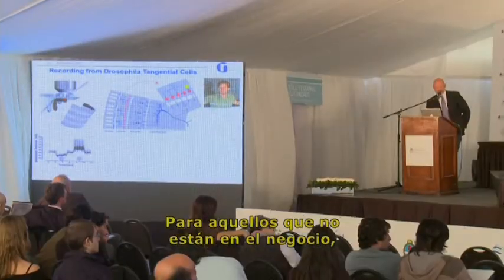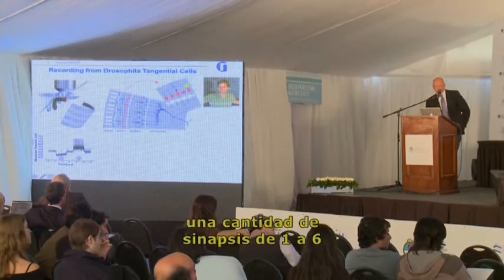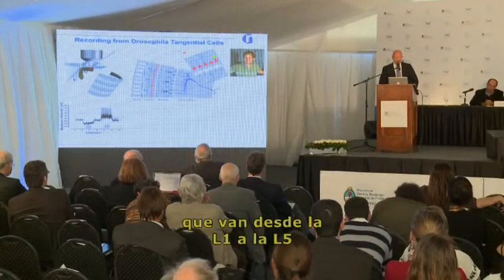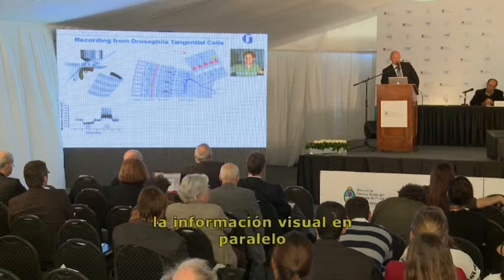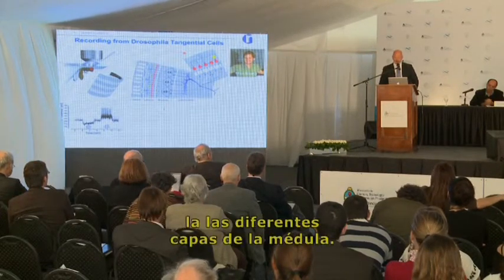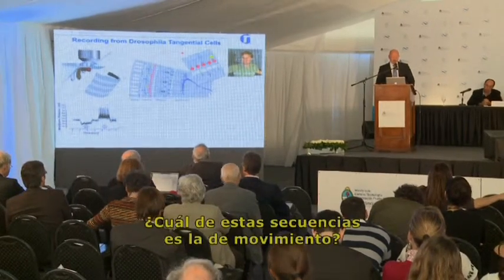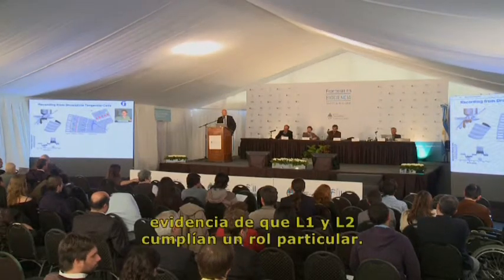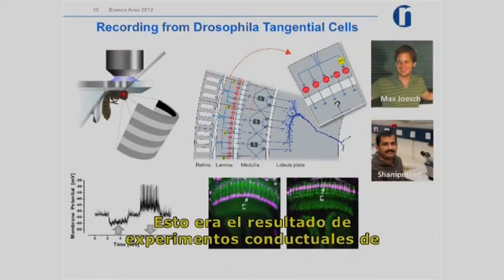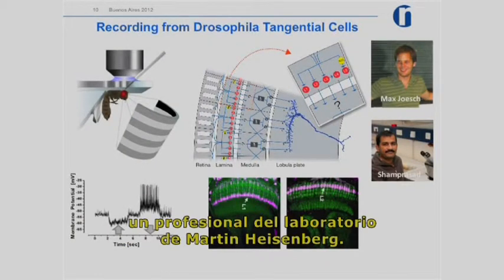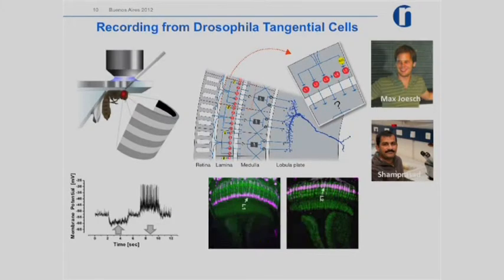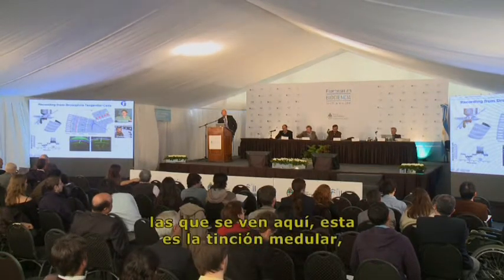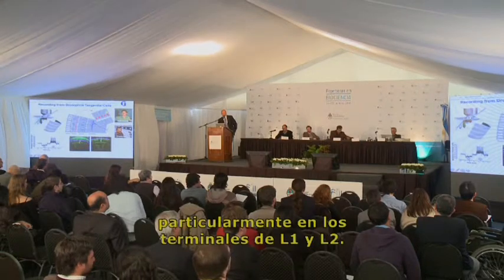We began by asking which laminar neurons provide the input signal to the motion detector. Photoreceptors R1–R6 synapse onto five different laminar neurons, L1 to L5, which bring visual information in parallel into different medulla layers. Which of these pathways is the motion pathway? There was initial evidence from behavioral experiments by Ian Trista in Martin Heisenberg's lab that L1 and L2 play a particular role. We focused on L1 and L2, using specific driver lines that label L1 and L2 terminals in the medulla.